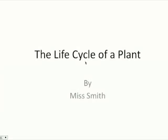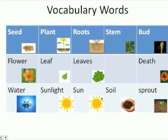The Life Cycle of a Plant by Miss Smith. Vocabulary Words: seed, plant, roots, stem, bud, flower, leaf, leaves, death, water, sunlight, sun, soil.